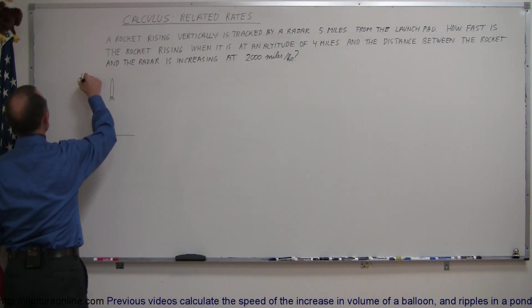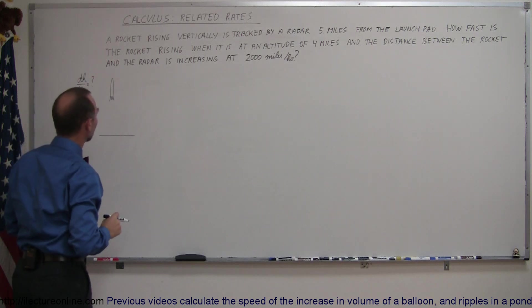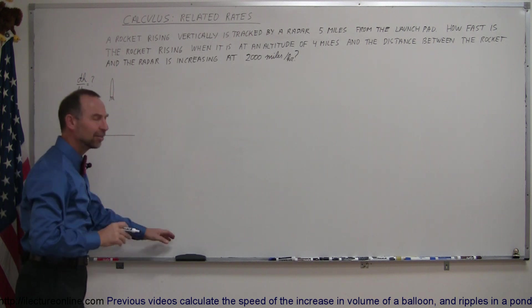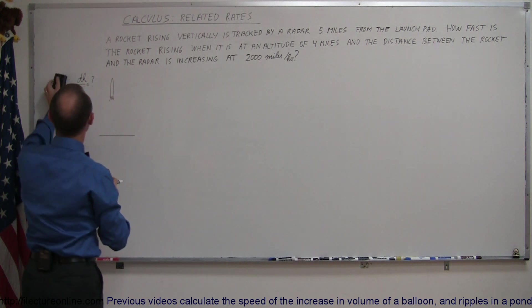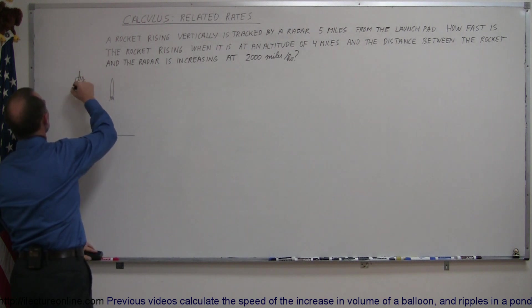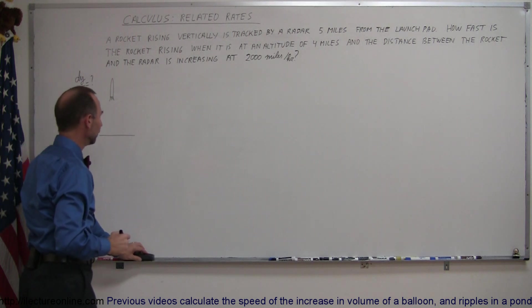So how about, they want to know the dh dt is equal to question mark. Maybe dh dy, let's use a more traditional variable. I'm going to use y instead. So I'm going to find the dy dt, the rate of change in the height with respect to time. That's what we're looking for.